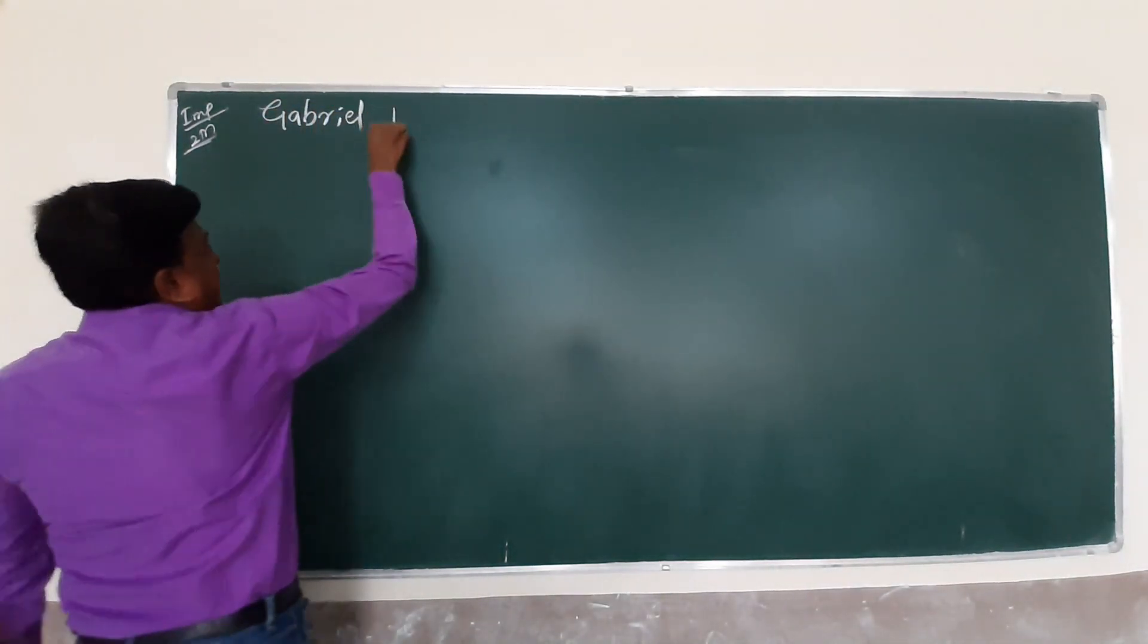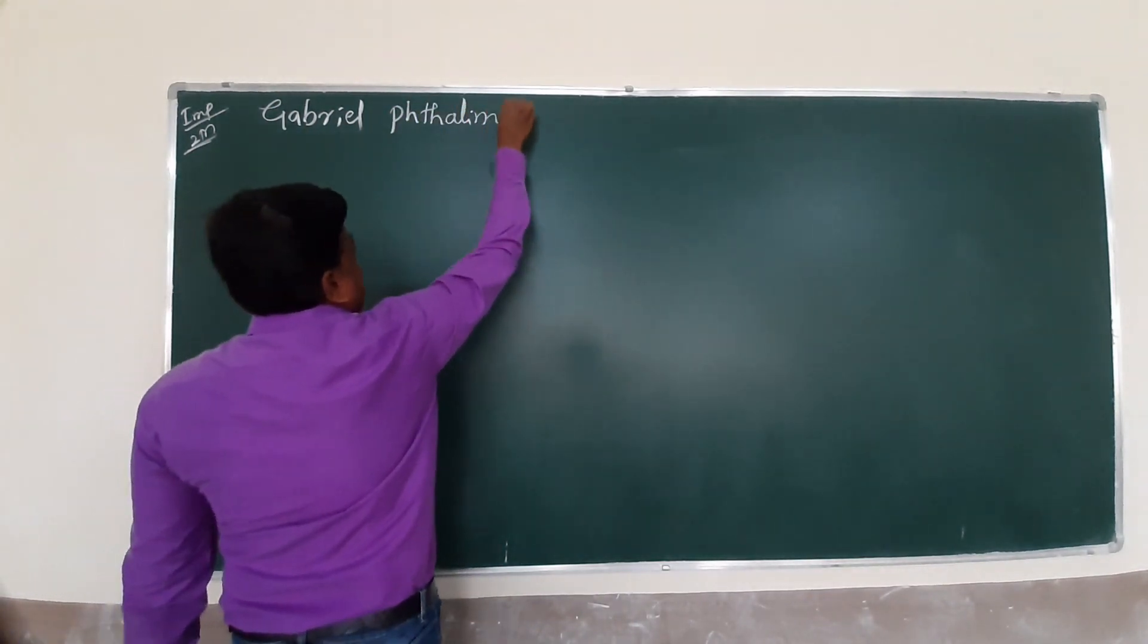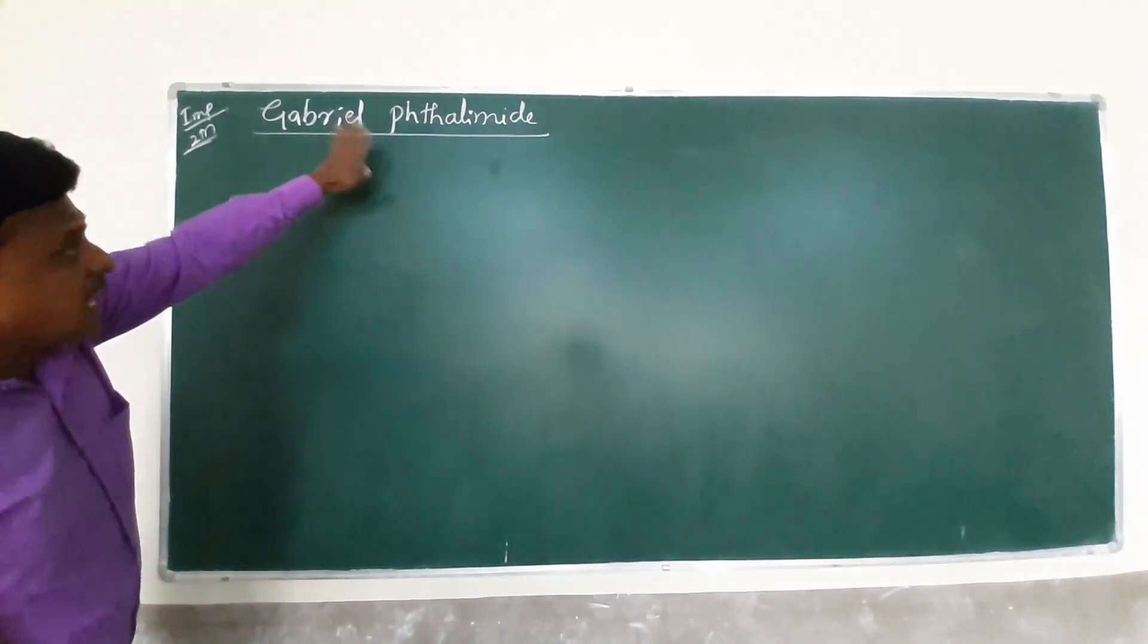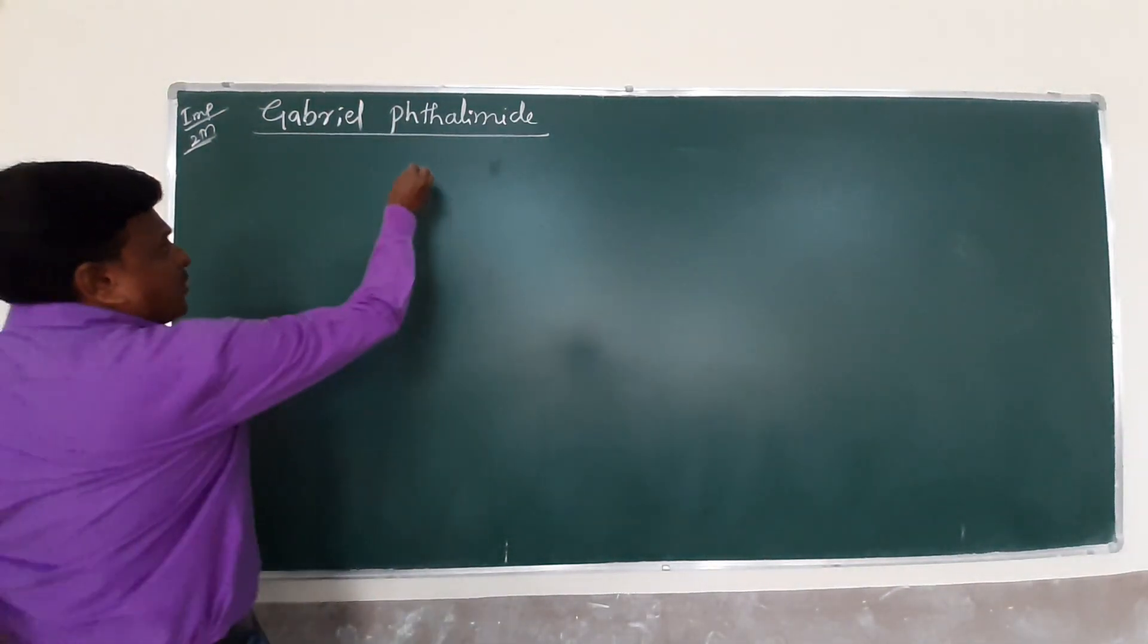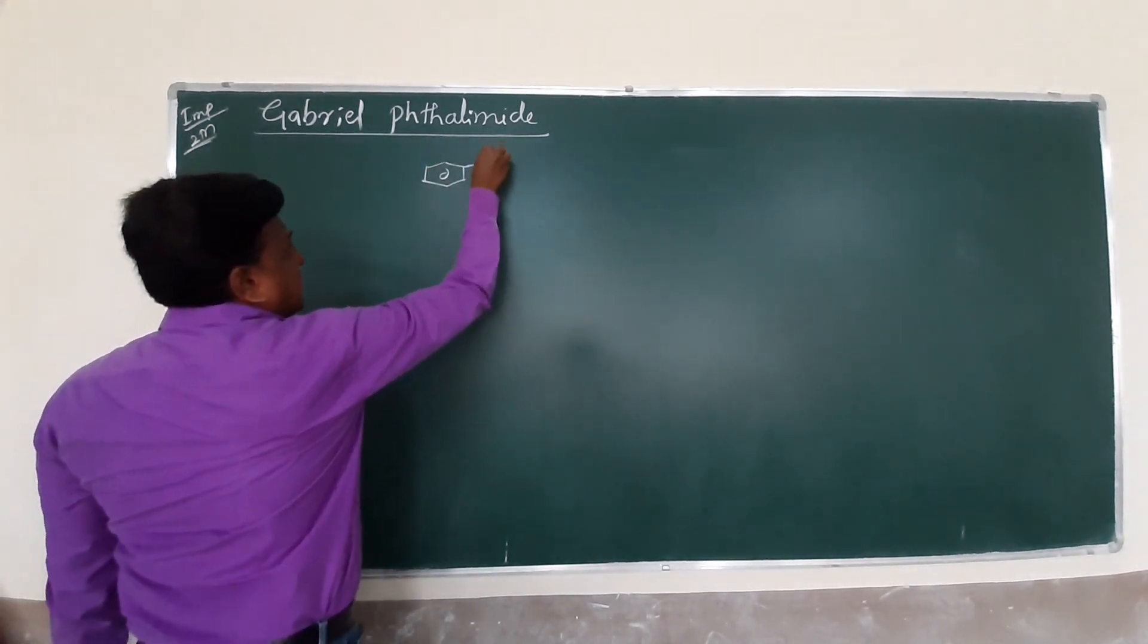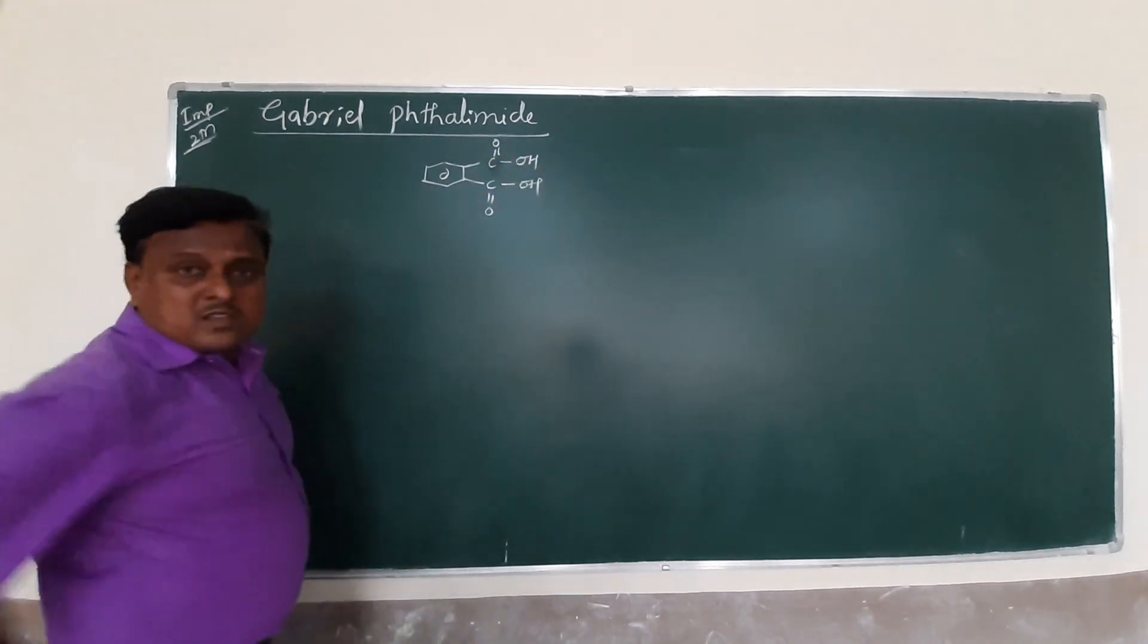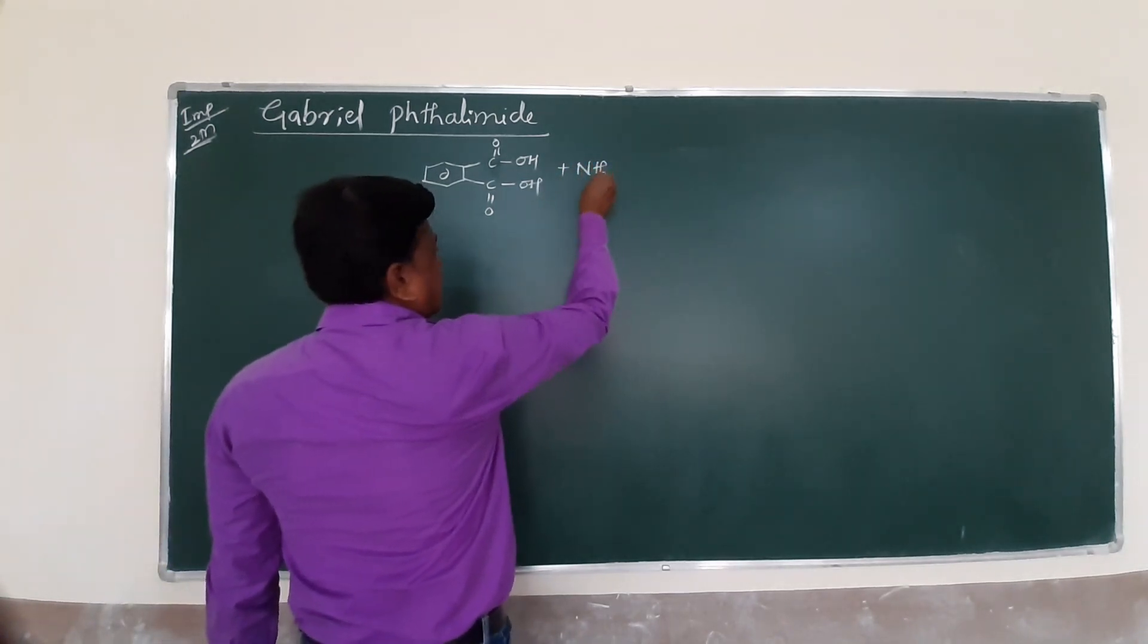After this Hoffman Bromamide, our target is very important. Only the preparation of aliphatic amines. Which method helps to prepare only aliphatic amines? Why cannot be aromatic? You want to see, Gabriel Phthalimide. Gabriel Phthalimide synthesis. Phthalimide is a derivative of phthalic acid. This is your phthalic acid with COOH and COOH groups.